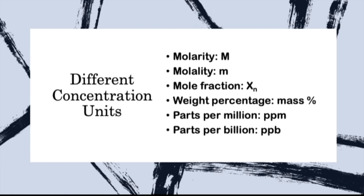The last three — weight percentage, parts per million, and parts per billion — all have a similar formula. What differs among them is their multiplier. For mass percentage, the multiplier is 100; for parts per million it is 1 million; and for parts per billion it is 1 billion.